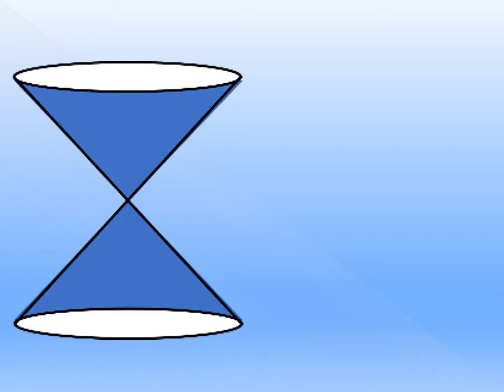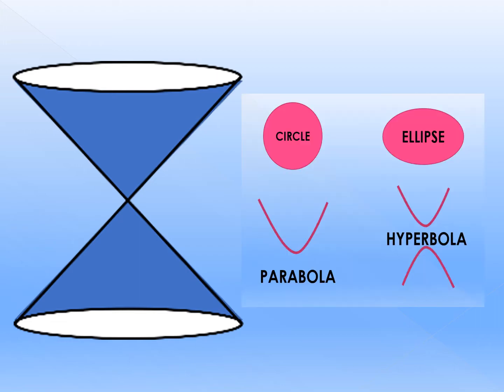Now let's have an activity. You're going to write down your answer on a piece of paper. You're going to imagine what will be the shape or figure that we can form out of the given question. Your answer can be a circle, an ellipse, a parabola, or a hyperbola. So let's start.